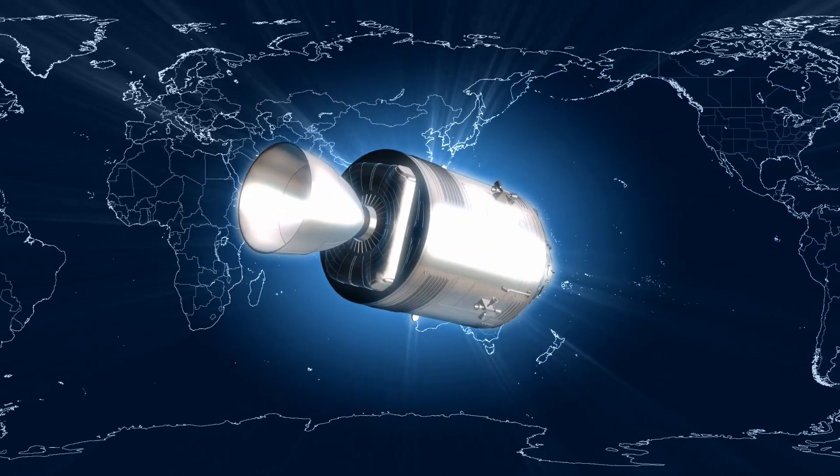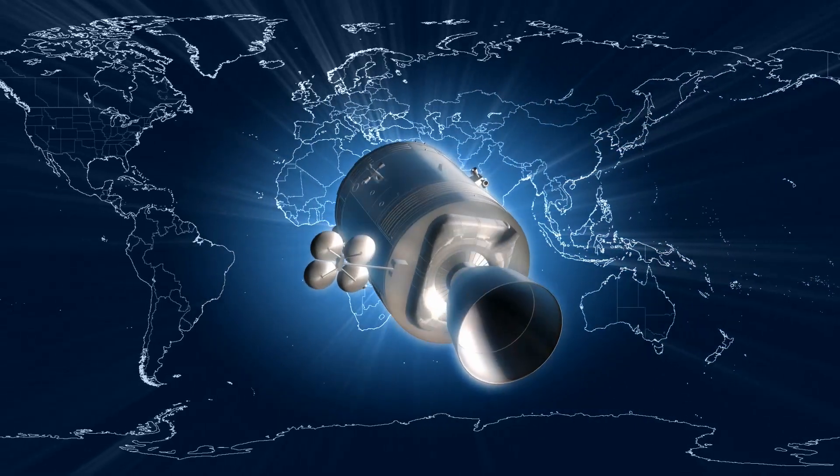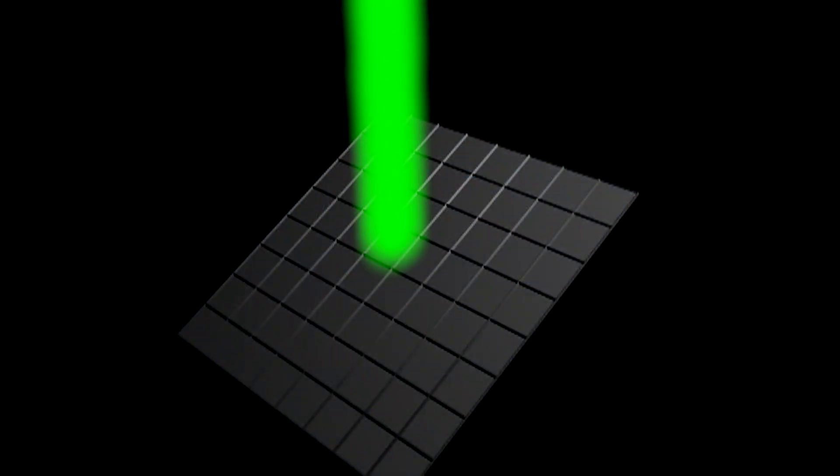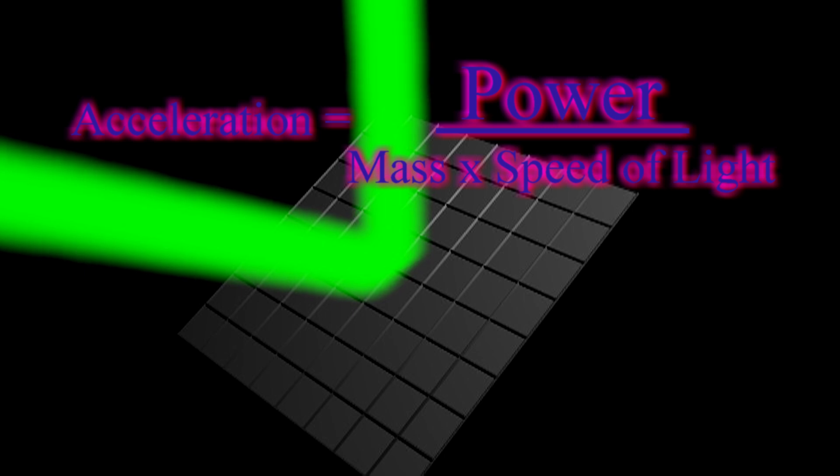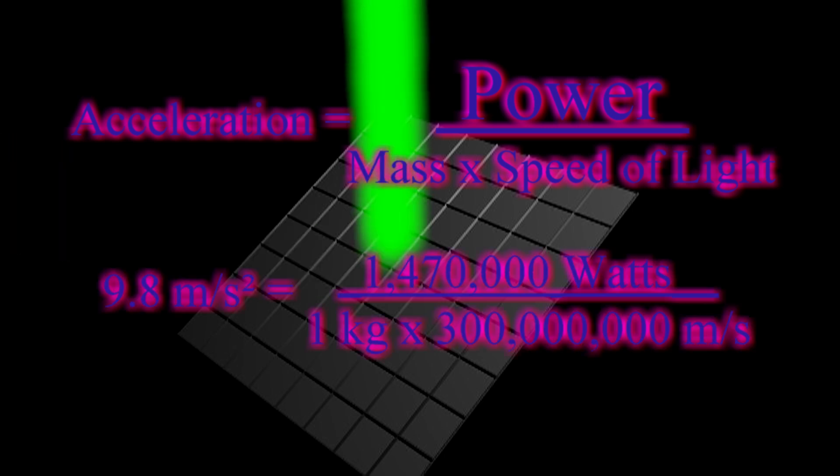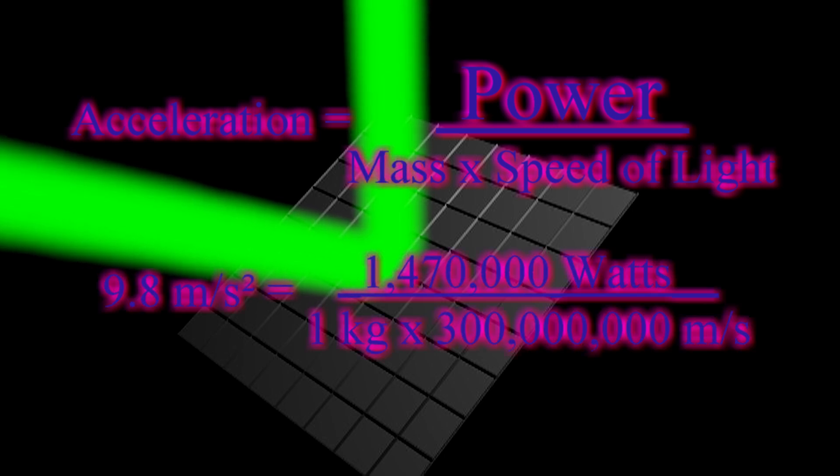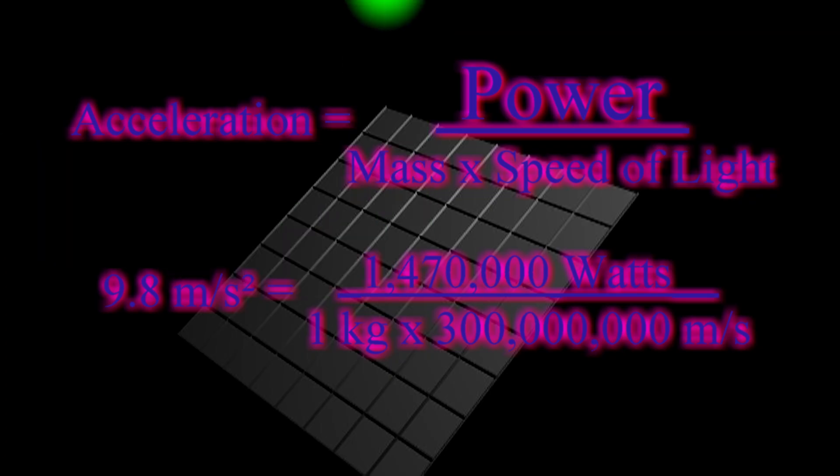But you can get twice the thrust by using a mirror instead. A photon hitting and absorbing into something only gives you that one push. If it reflects off it it doubles that push, since it moves away with the opposite momentum it hit with, meaning mirrors let you get twice the bang for your buck, or watt, and gives you 1.47 megawatts per kilogram of object as your 1g power need.